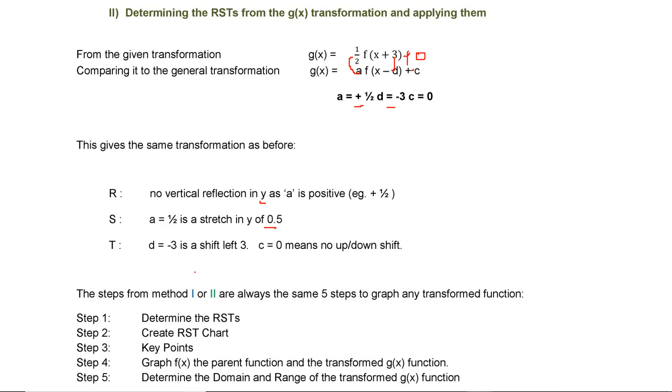Now the steps from method 1 and 2, they are always the same till this step to graph any transformed function. The first step will always be determine the RSTs, that is the reflection, scaling, and transformation variables. We create an RST chart.